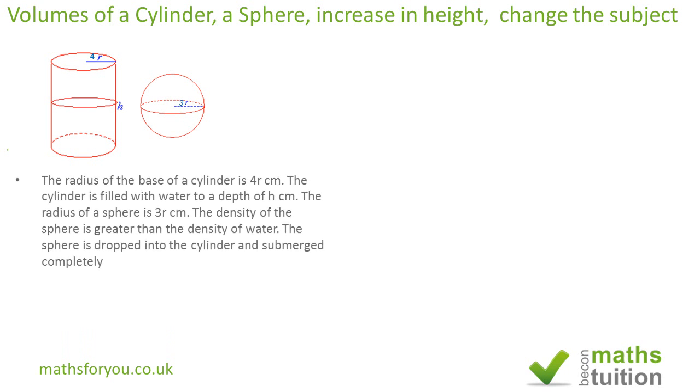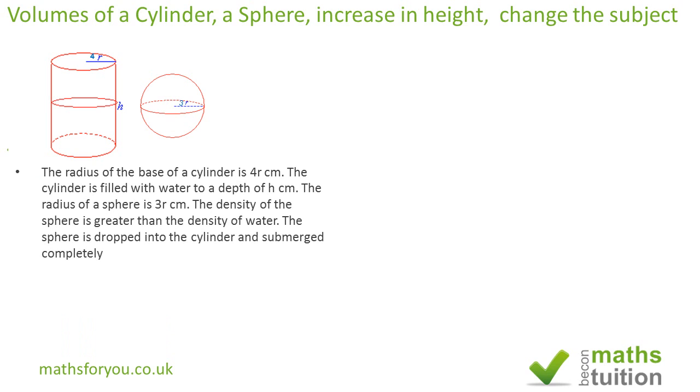Now basically what's happened here is that we've got water already in this cylinder here and the height of water is H. We also have this sphere which has a density greater than that of water and there's enough water in the cylinder to submerge completely this sphere when it's dropped into the cylinder. Now when it's dropped into the cylinder obviously there's displacement of water so the height of water will then increase.